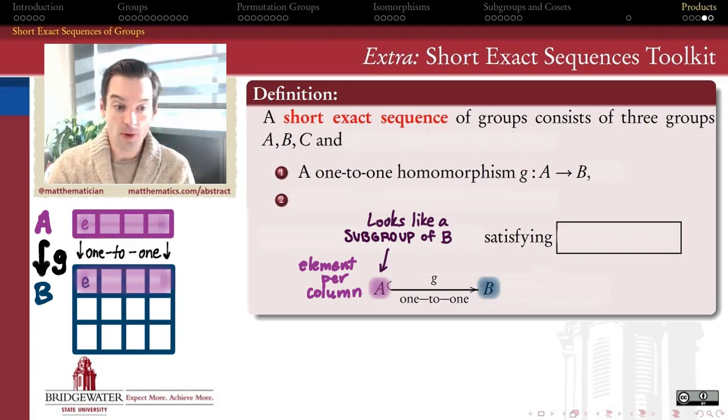So my rule of thumb in thinking about the role that A plays in this short exact sequence is that A looks like it's a subgroup of B.